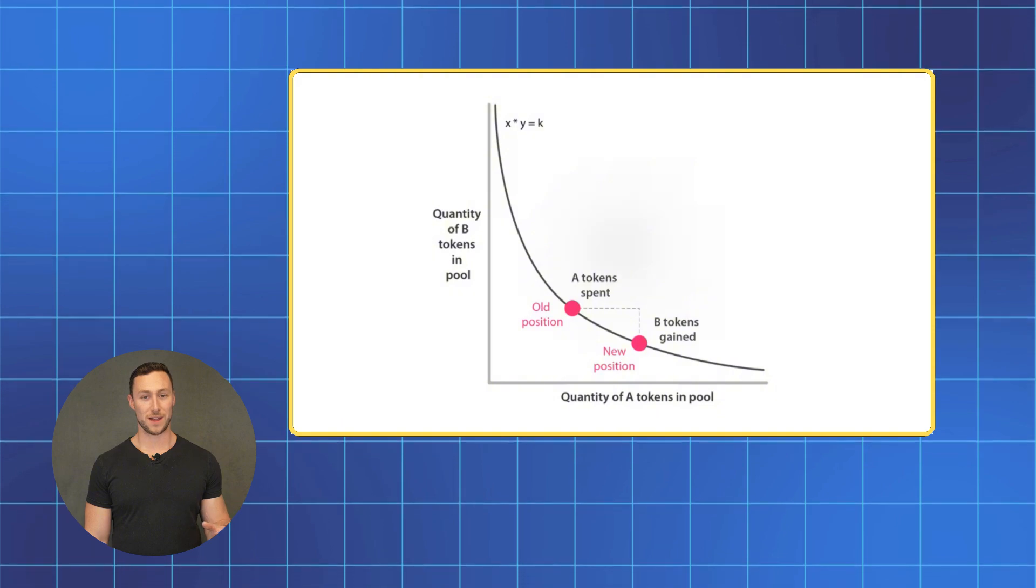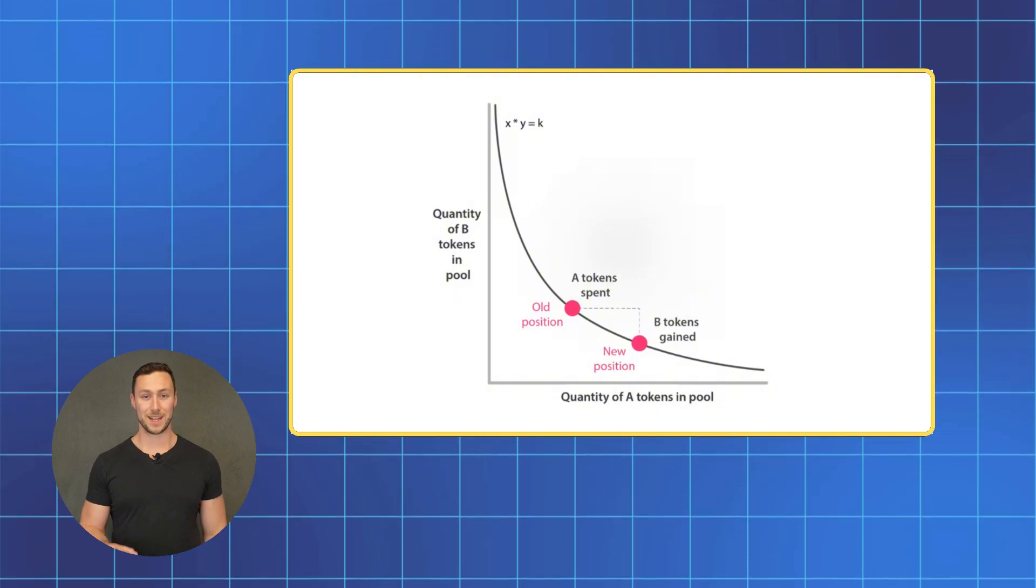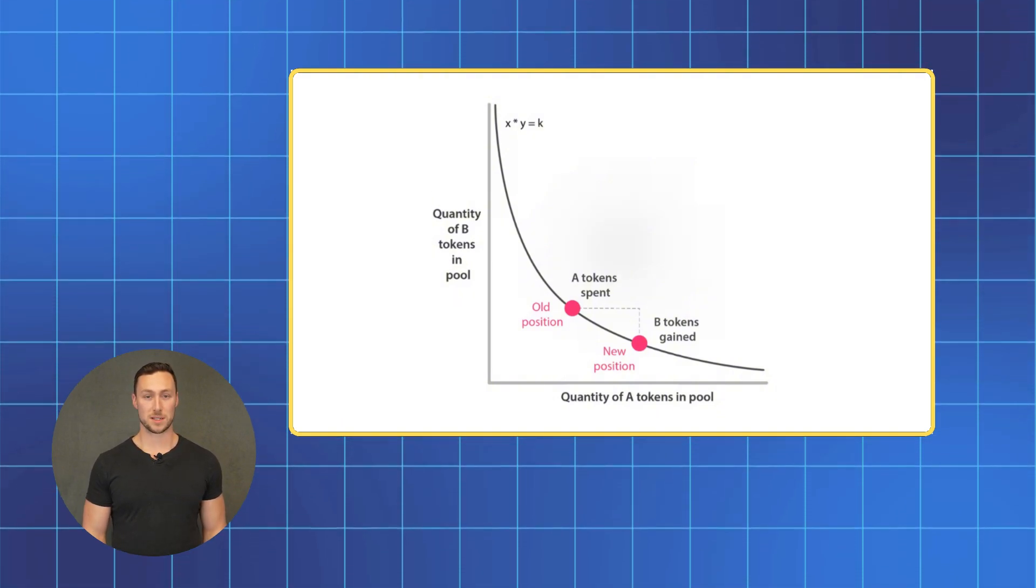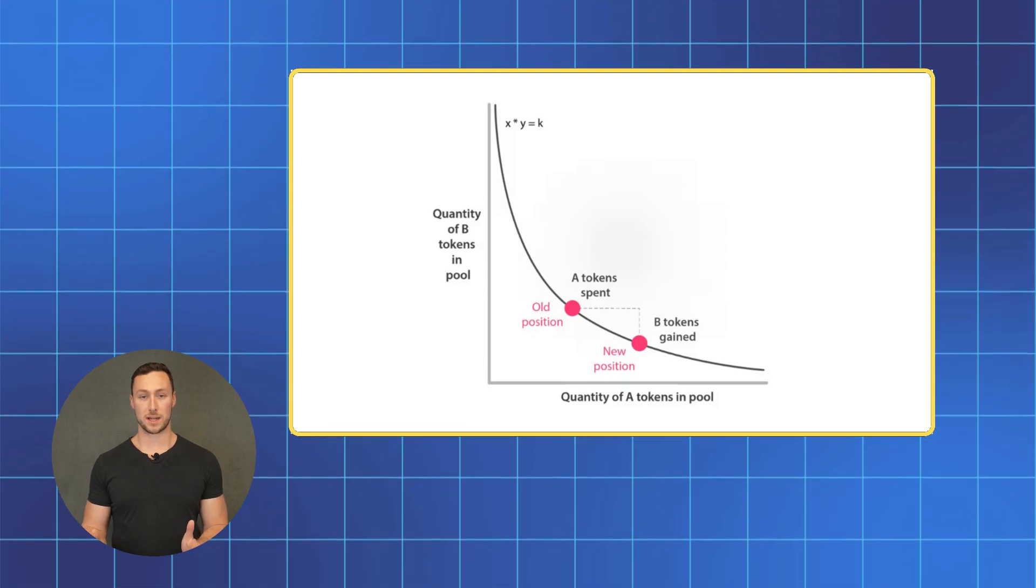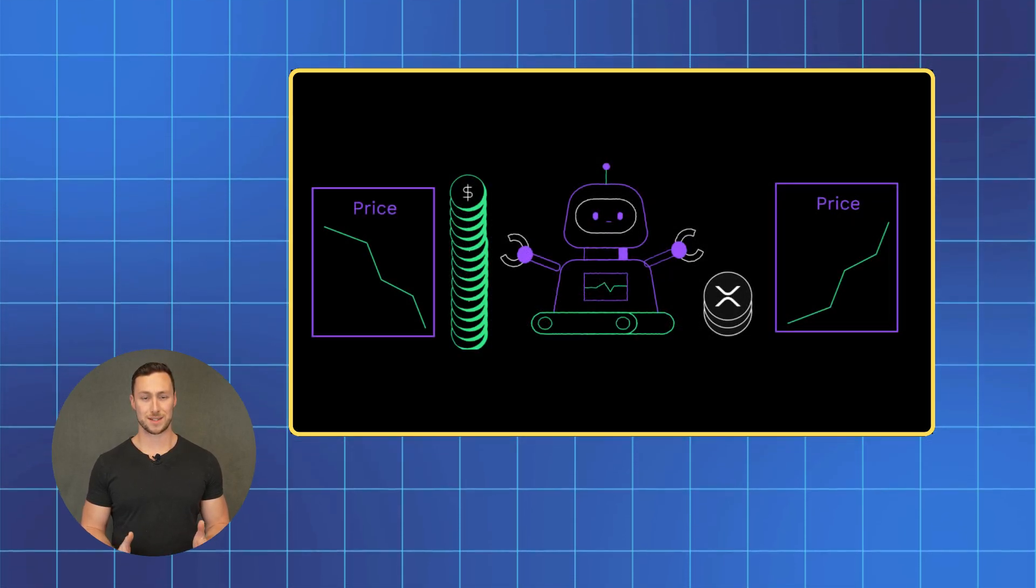Once you've made this trade, there would now be 5,005 token A's in the pool and 999 token B's. Since the price is the ratio between these two sides of the pool, the price would now adjust slightly.